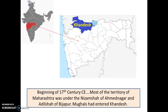This is a map of India and we have Maharashtra to the west. Maharashtra at the beginning of the 17th century common era was mostly under the Nizam Shah of Ahmadnagar and the Adil Shah of Bijapur. Similarly, the area of Khandesh, which you see here in blue, was ruled over by the Mughals, who came from North India.